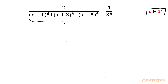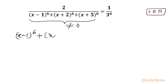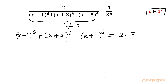As you can see, the powers are even — power 6 is there — so this cannot be 0. So I can cross multiply the terms. Let us multiply (x minus 1) whole power 6 plus (x plus 2) whole power 6 plus (x plus 5) whole power 6, and on the right hand side I will be writing 2 times 3 raised to the power 6.